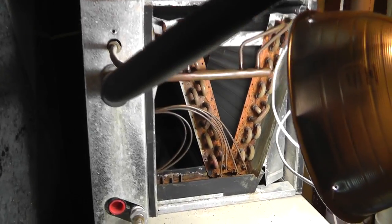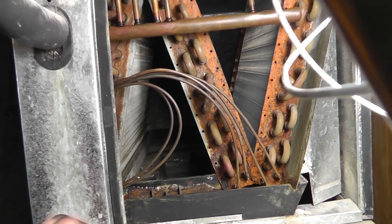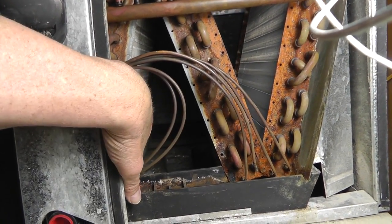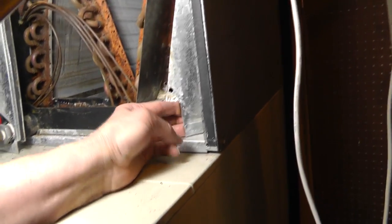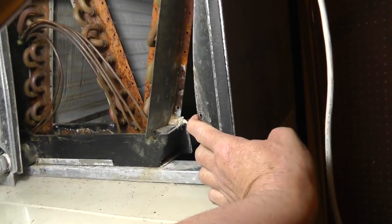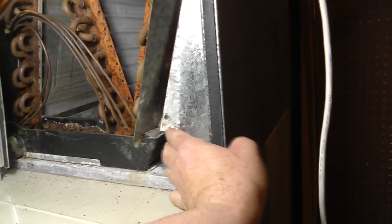The 9200 has got three coil surfaces that need to be cleaned. We've got one here, one over here, and there's another one that's kind of hidden. You've got to remove this panel here and reach in here. There's another set of fins that need to be cleaned.